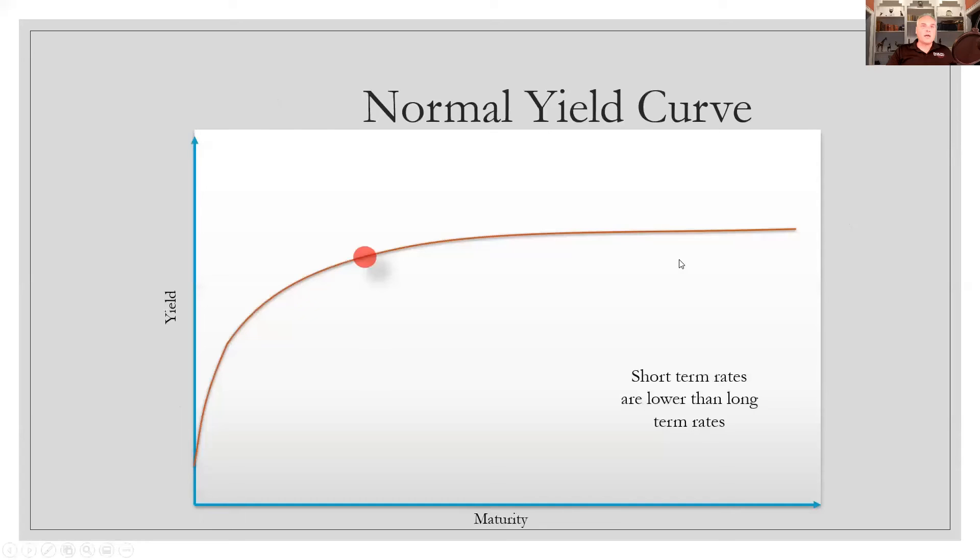And so some of the tools that are used to forecast whether a recession is coming or not are the yield curve. This is a normal yield curve, another thing we've talked about before. And it just shows that as the maturity on a bond is longer, typically you're going to see a higher interest rate than you will for extremely short-term bonds.